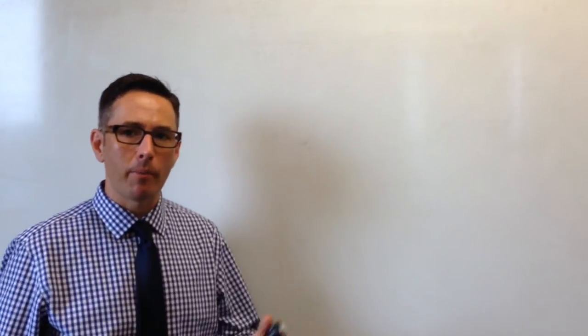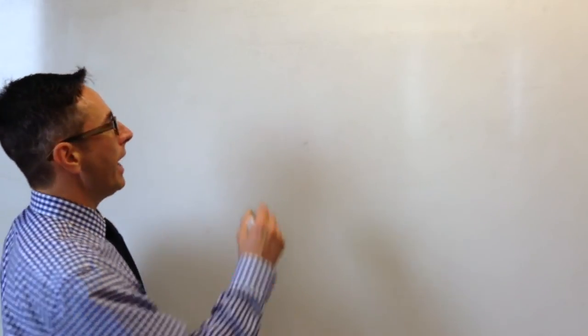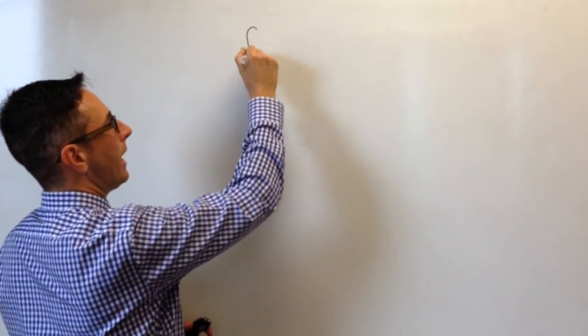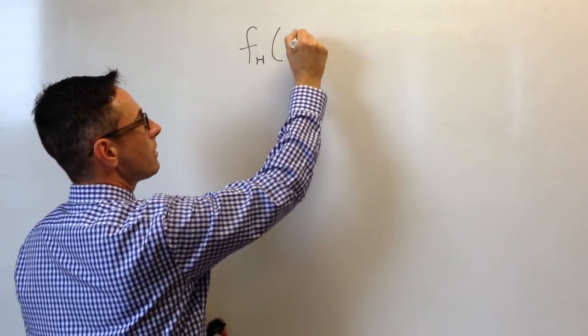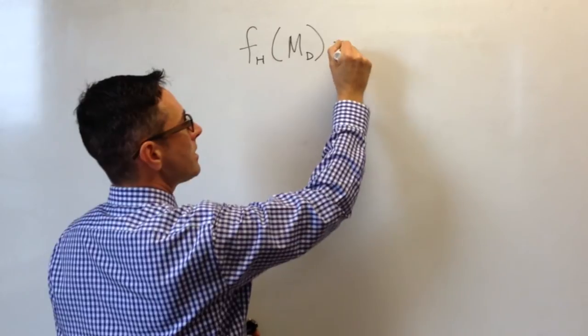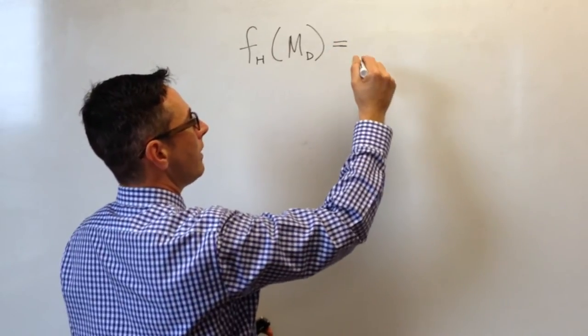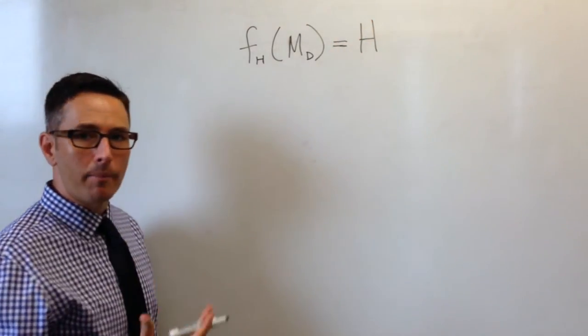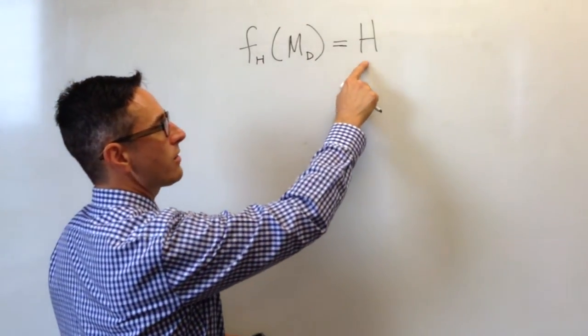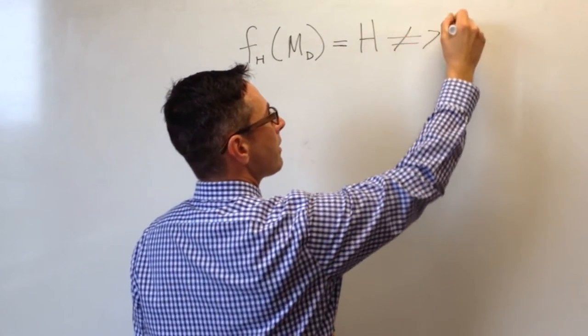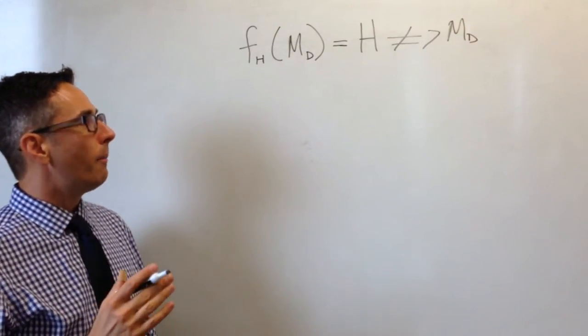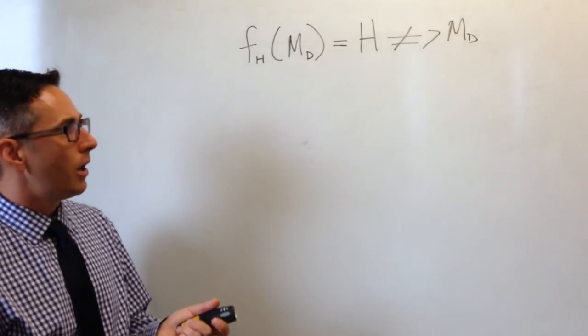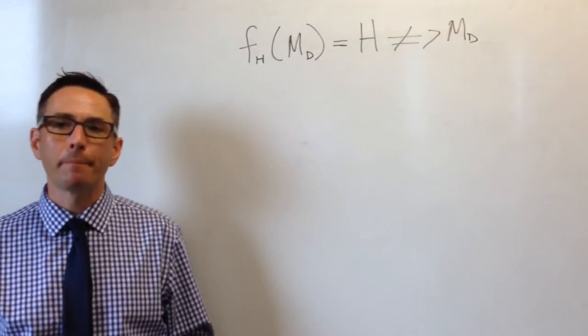When we write this down, we can use a graphical representation, or we can write in a more mathematical representation where we say we have a hash function that takes some message, some data, and it produces some fingerprint. We'll just say H for hash code. And remember, what we said is that if you have H, it's very, very hard to recover the message itself. In fact, it's basically impossible. This is a more mathematical way of representing that.